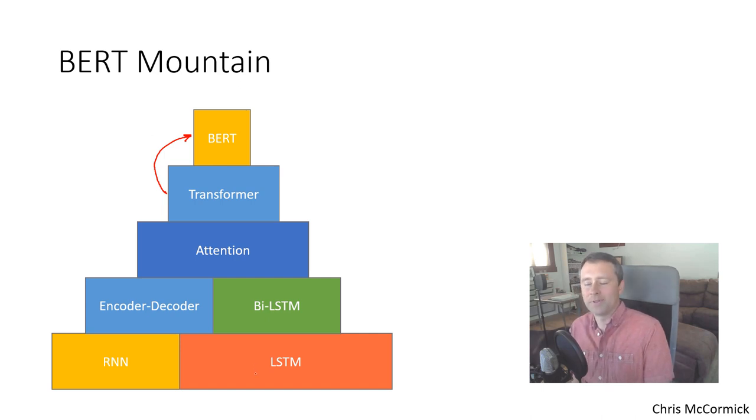And then we need to know the encoder decoder architecture for RNNs and this notion of bi-directional LSTMs. And then attention was this idea that kind of builds on top of LSTMs or improves them. And then there was this concept of the transformer that came out of the paper Attention is All You Need. And then finally BERT is built on transformers.